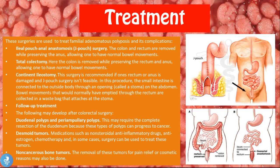Another procedure is a total colectomy with ileorectal anastomosis, in which the colon is removed while preserving the rectum and anus, allowing normal bowel movements. The ileum — the last part of the small bowel — is attached to the rectum and anus in what is called an ileorectal anastomosis.